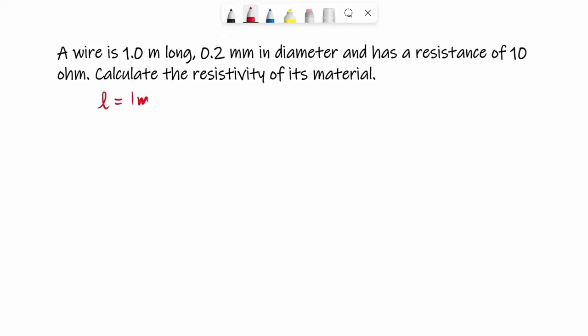d is 0.2 mm, so I need to know what is the radius of the wire. So it would be half of that, 0.1 mm. And convert mm into meter, so it would be divided by thousand, which is nothing but 10 to the power minus 3 meter.